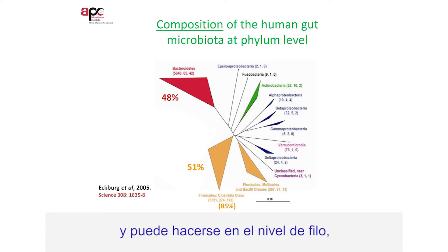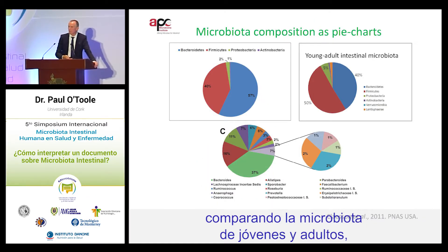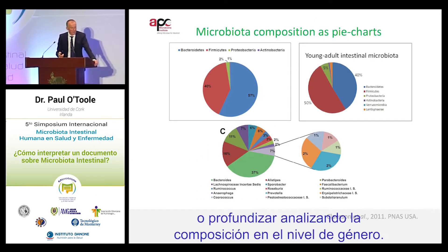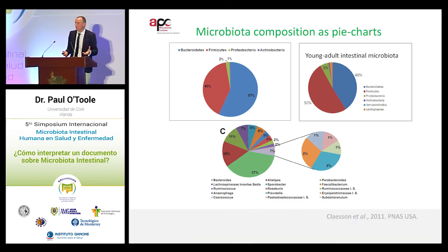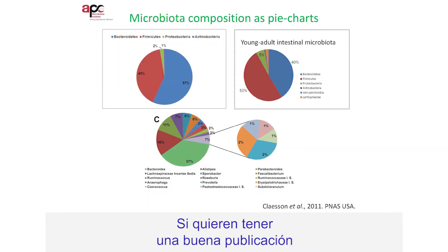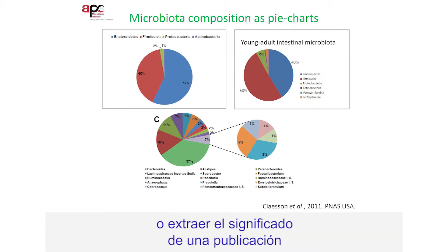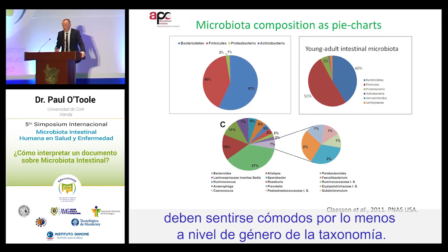It's also possible to represent the microbiota as pie charts, and this can be done at either phylum level, where we're comparing the microbiota of the young and the old. You can also drill down and look at the composition at genus level. Typically, if you want to get a nice paper out or to extract meaning from a paper, you have to be comfortable at at least genus level of taxonomic division.